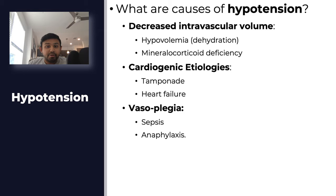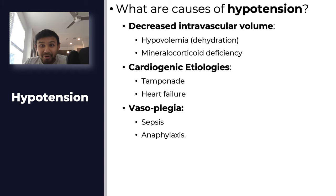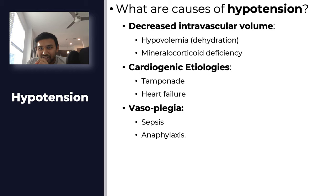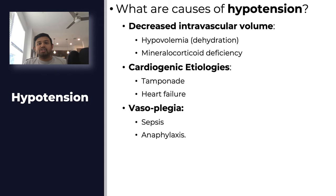Another important cause of hypotension is vasoplegia. When thinking about vasoplegia, think about sepsis — increased cytokines cause vasodilation and decreased vascular resistance. Anaphylaxis with histamine release causes hypotension and is an important test question — watch for a trigger like a peanut or bee sting, followed by respiratory distress, hypotension, and GI symptoms.